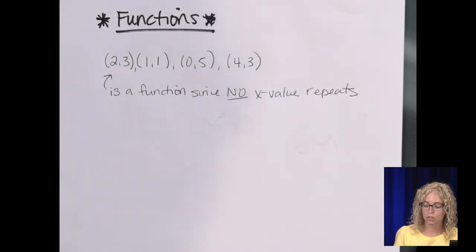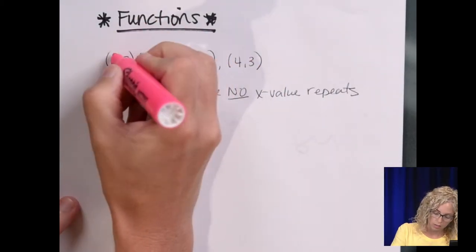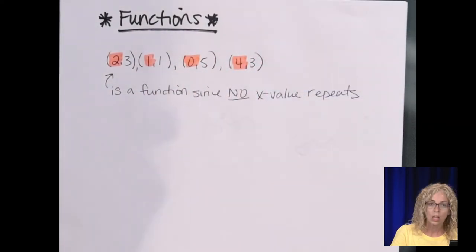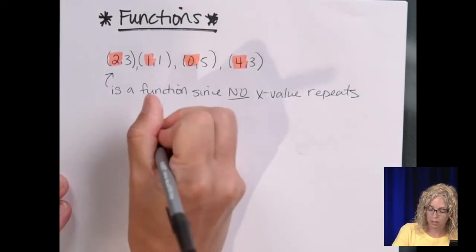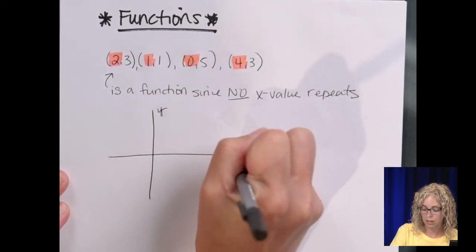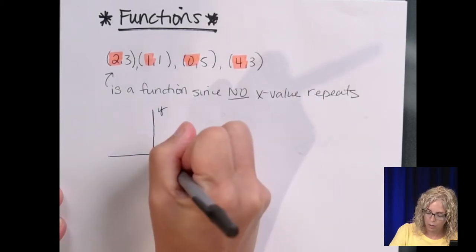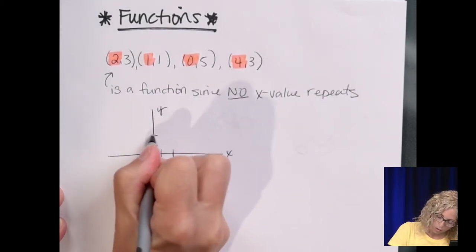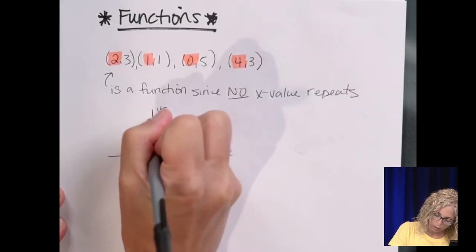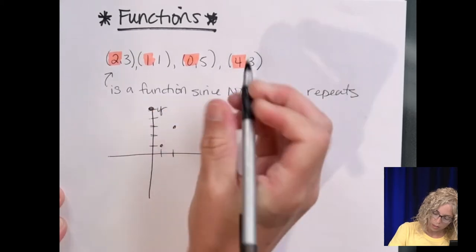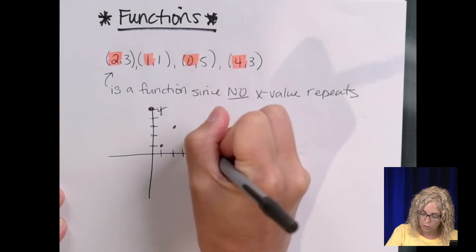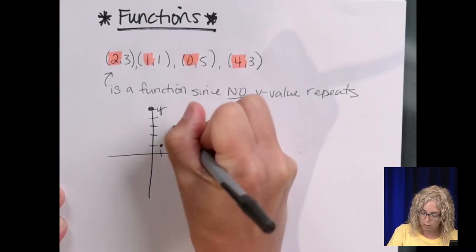So your focus is just on the x's. You can ignore the y's. If we were to look at this in the coordinate plane, here's our y-axis, x-axis. We've got the points plotted: (1,1), (2,3), (0,5), and (4,3).